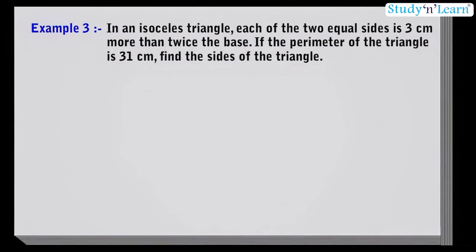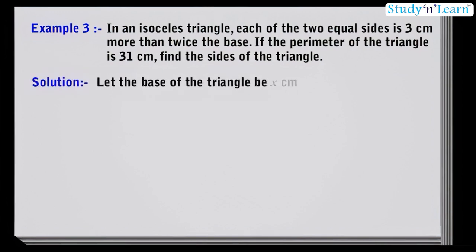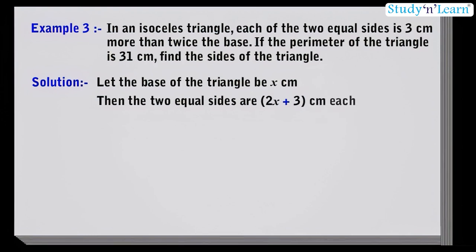The next example is: in an isosceles triangle, each of the two equal sides is 3 cm more than twice the base. If the perimeter of the triangle is 31 cm, find the sides of the triangle. Let's solve this. Let the base of the triangle be x cm. Then according to the question, the 2 equal sides are 2x plus 3 cm each.